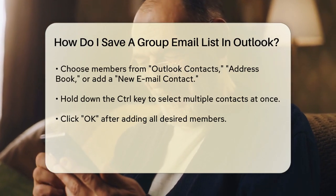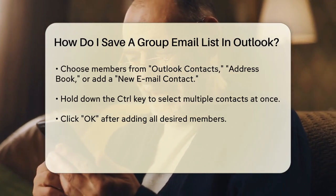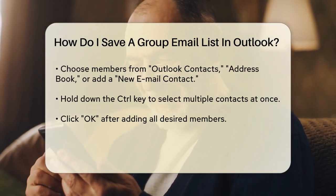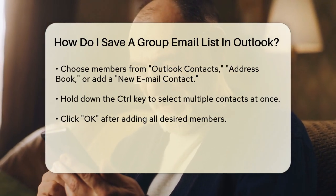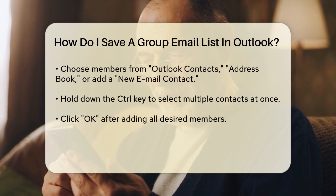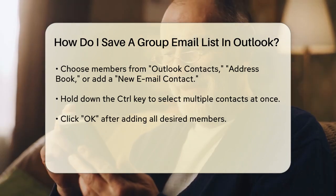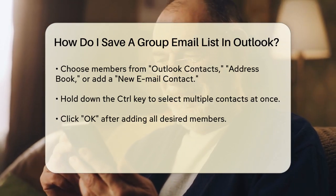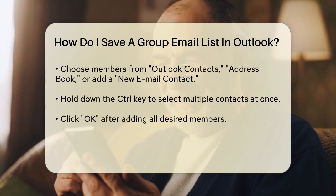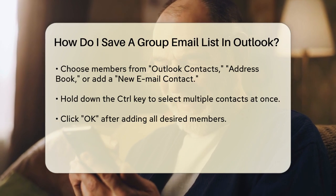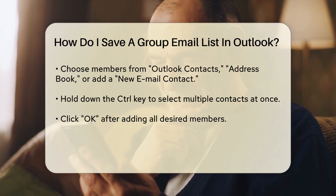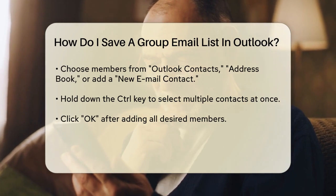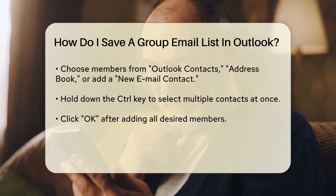You can select members from Outlook Contacts, from Address Book, or even add a new email contact. If you're selecting multiple contacts, hold down the Control key as you choose them. After adding all the members, click OK.